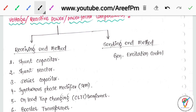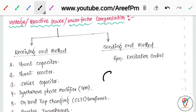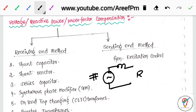Now, what methods do we have? We have two methods. For a transmission line with a generator at the sending end and a transformer reactance, the first method is the generating end method and the second one is the receiving end method.